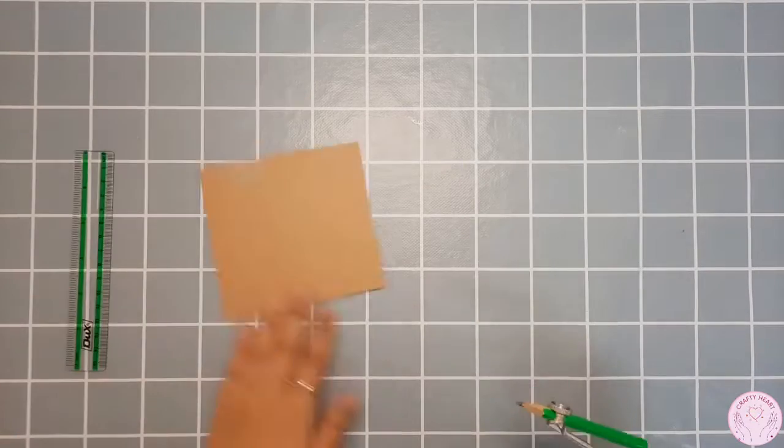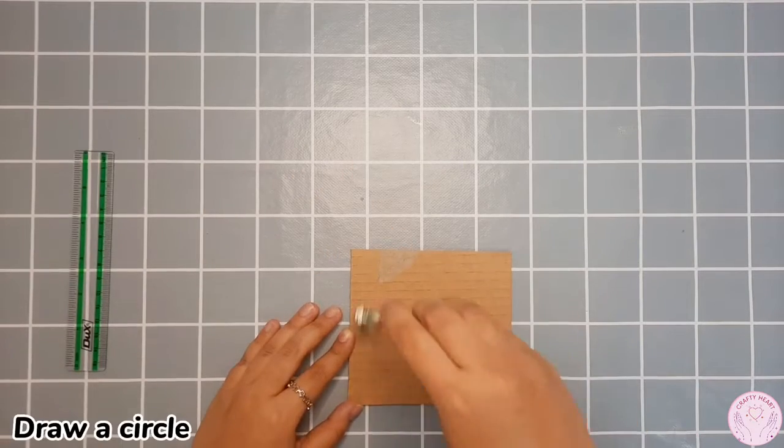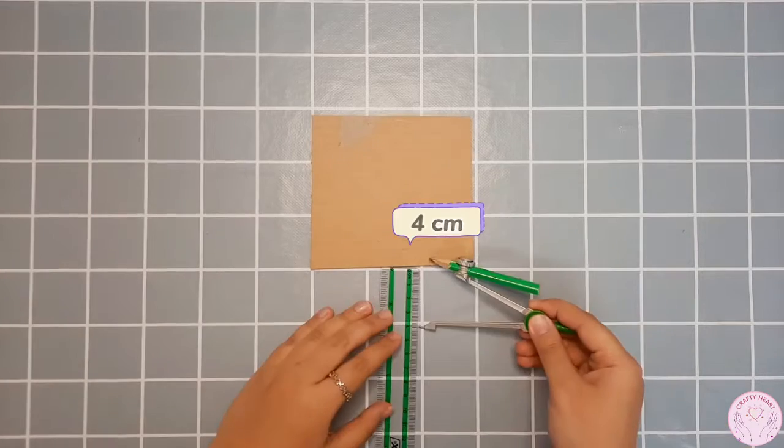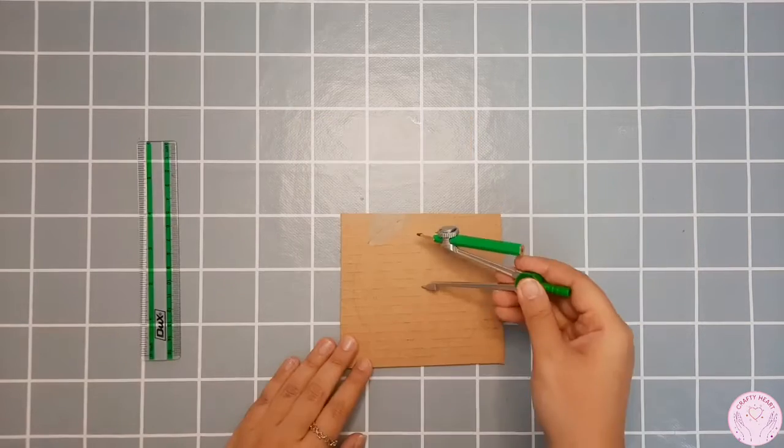On a cardboard piece, I'm drawing a circle of 5 centimeters first. Another circle of 4 centimeters.